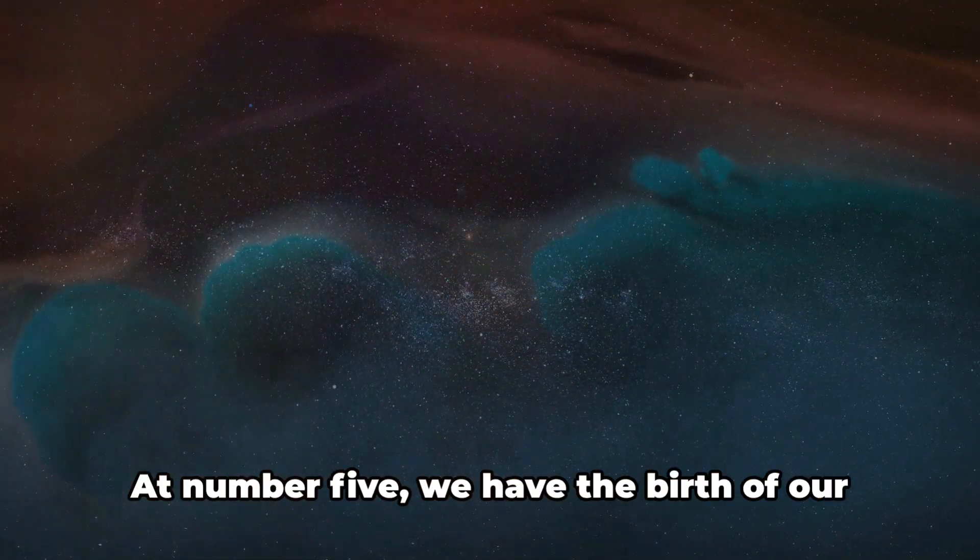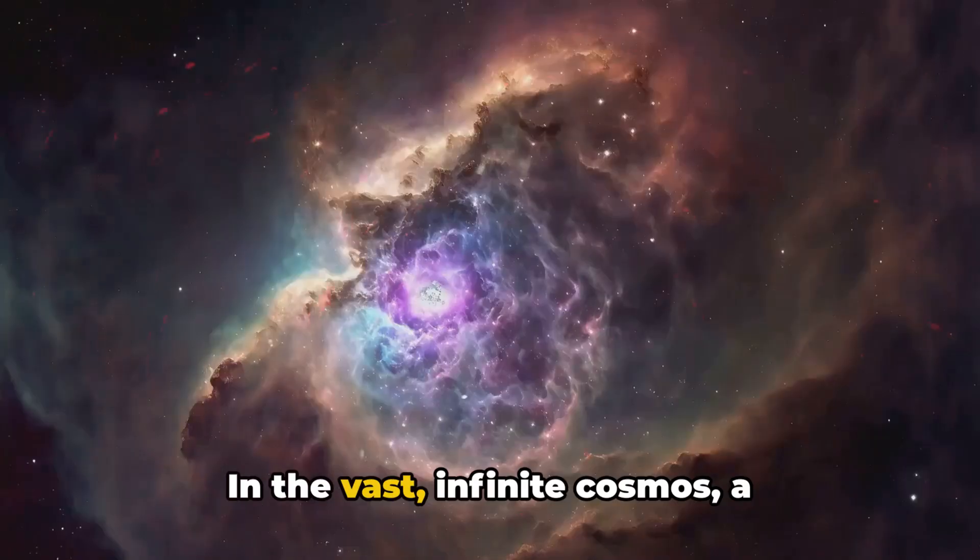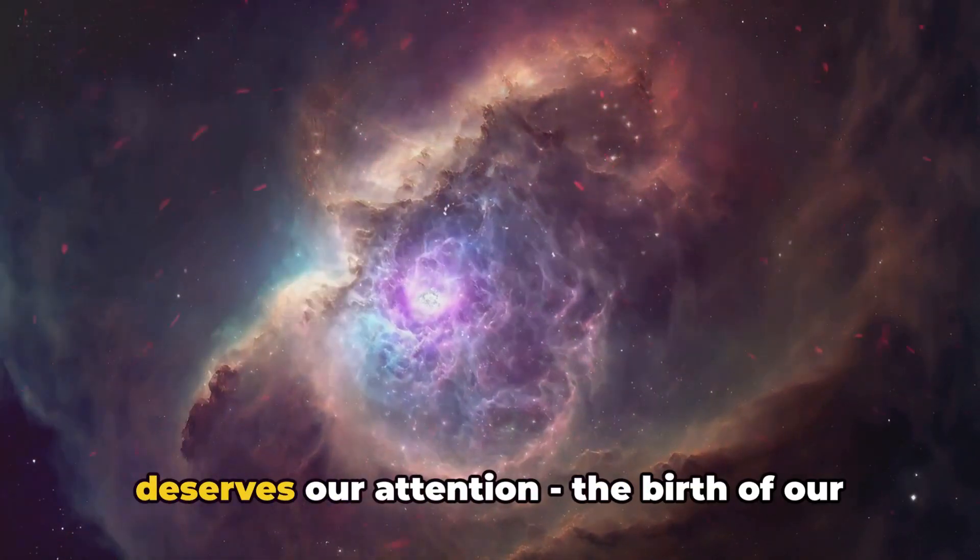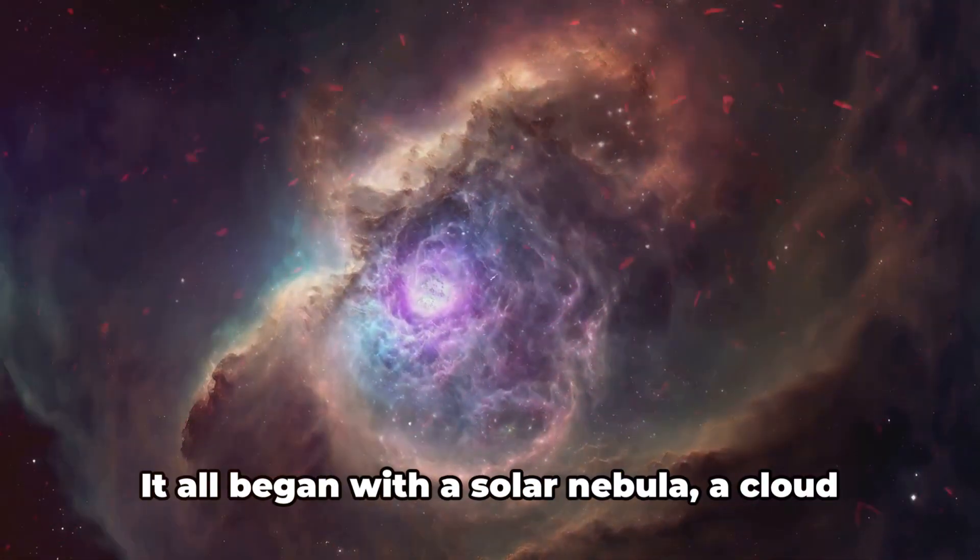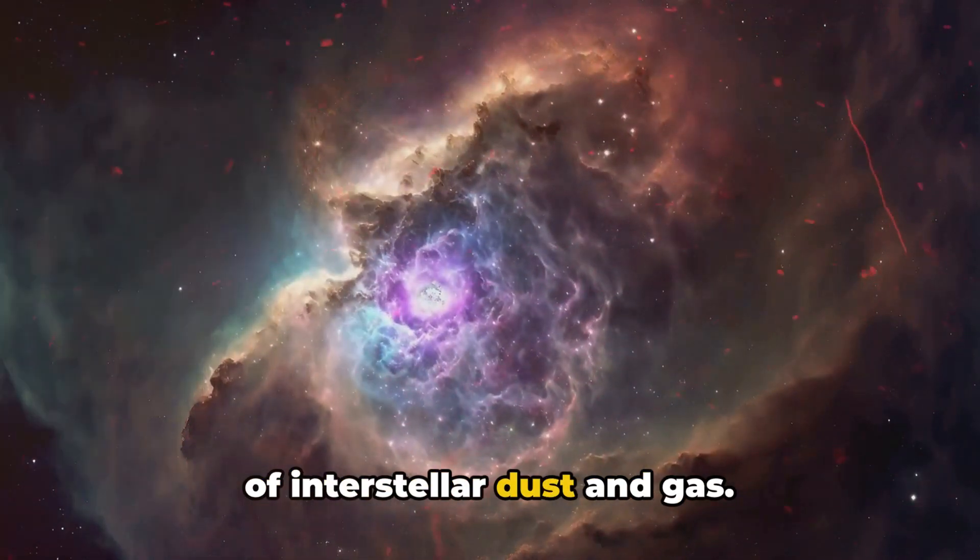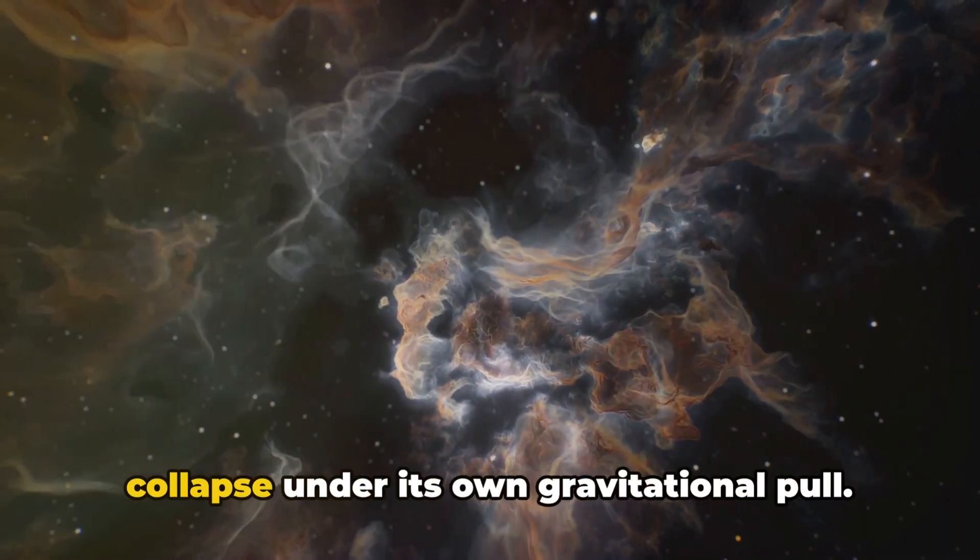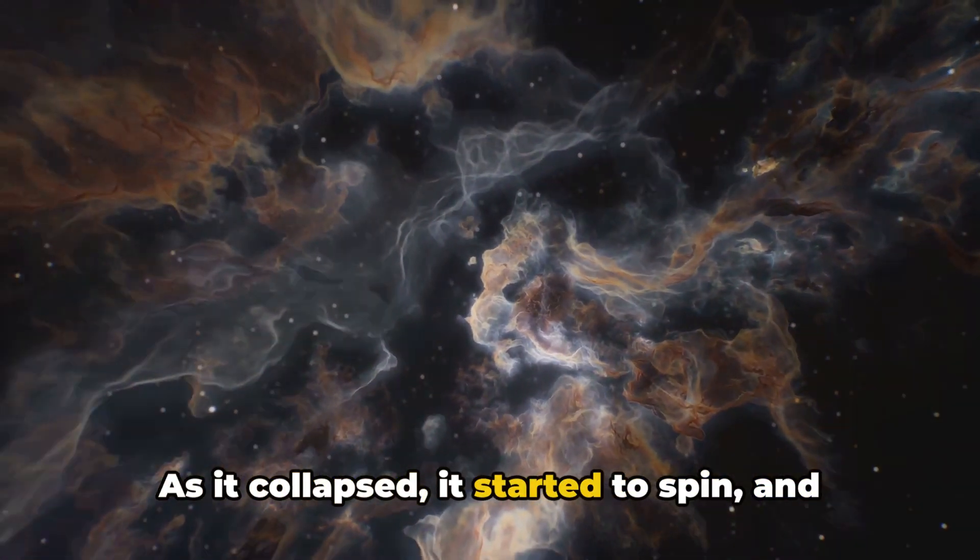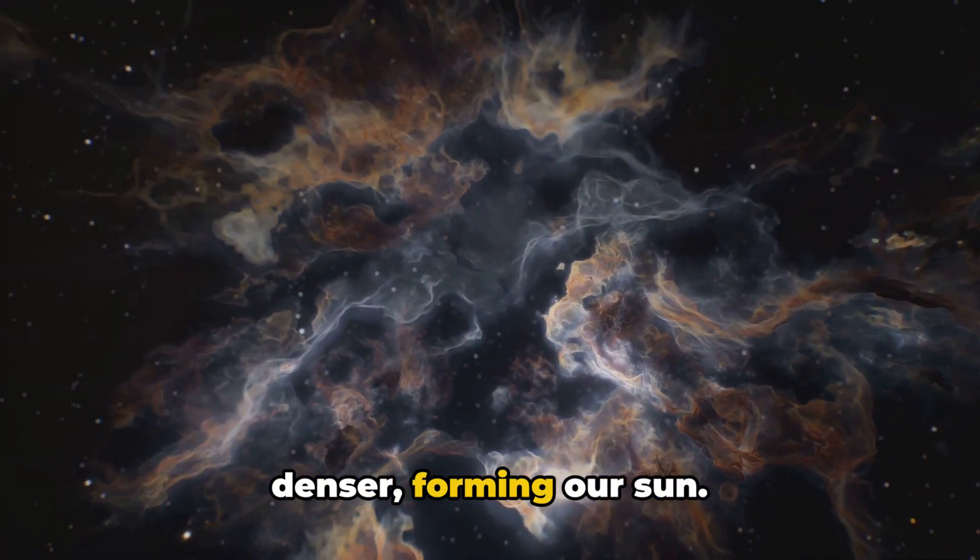We're halfway through our list. At number five, we have the birth of our solar system. In the vast, infinite cosmos, a particular event of cosmic collision deserves our attention. The birth of our very own solar system. It all began with a solar nebula, a cloud of interstellar dust and gas. This nebula, enormous and dense, began to collapse under its own gravitational pull. As it collapsed, it started to spin. And as it spun, the center grew hotter and denser, forming our sun.